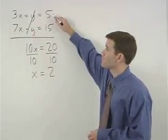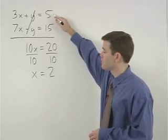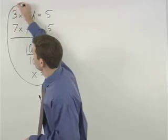So let's go with our first equation, 3x plus y equals 5. If we plug a 2 back in for x, that gives us 3 times 2 plus y equals 5.